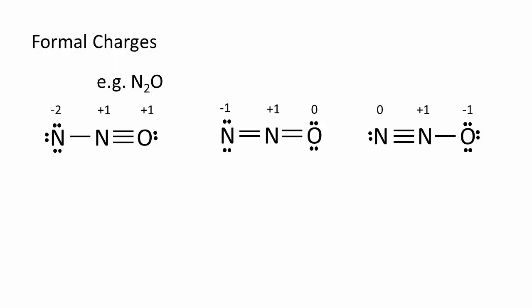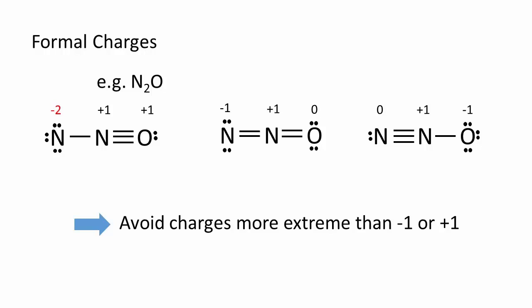We should avoid, if at all possible, any formal charges. For N2O, this is not possible. Failing that, we want to avoid charges more extreme than negative one or positive one. Therefore, the first structure is not very good.